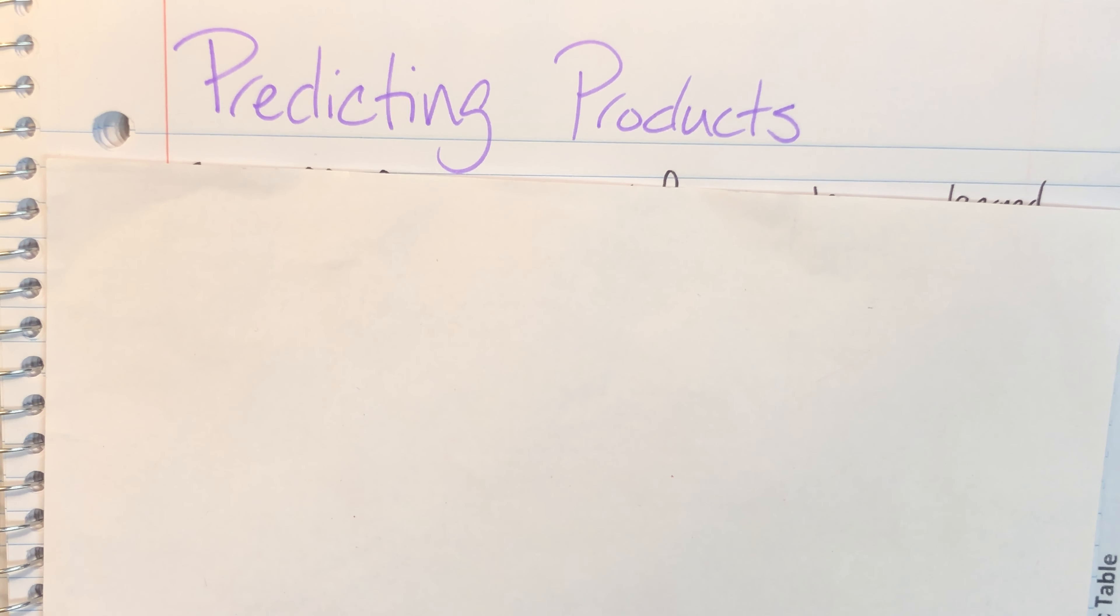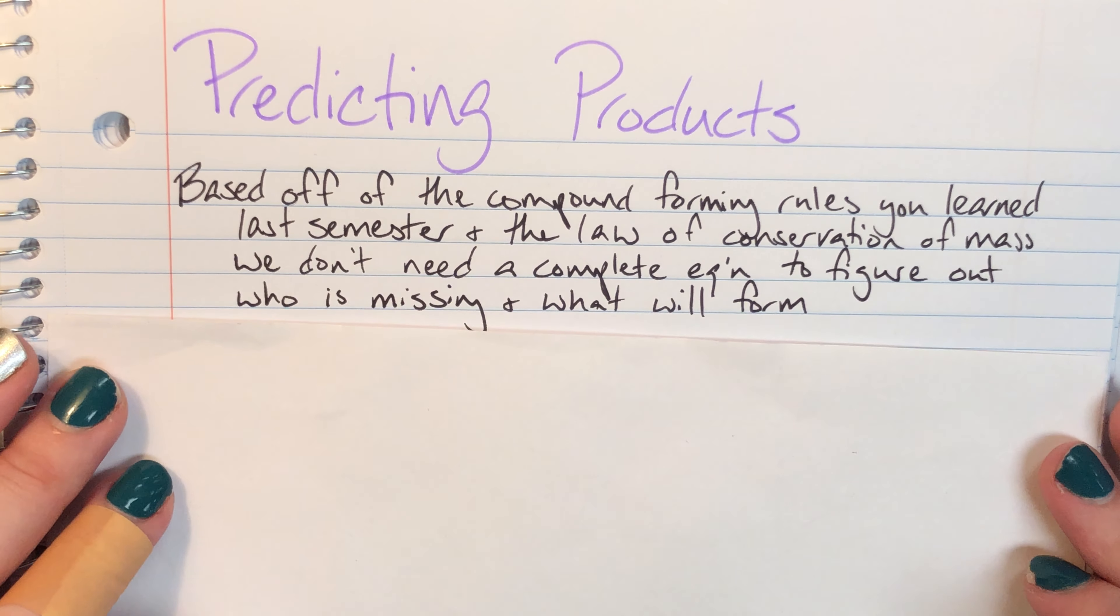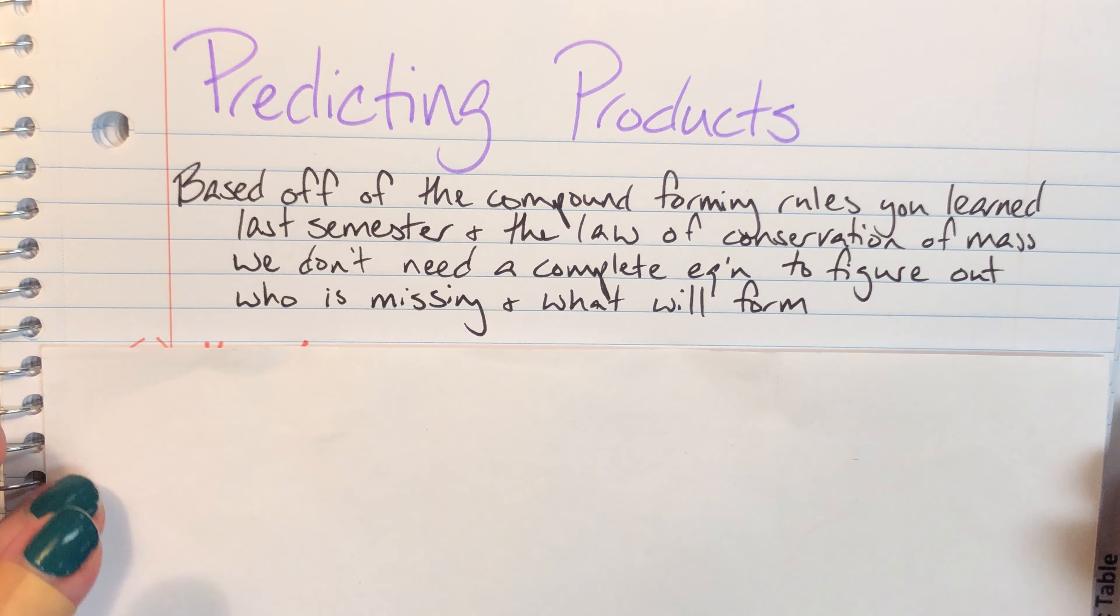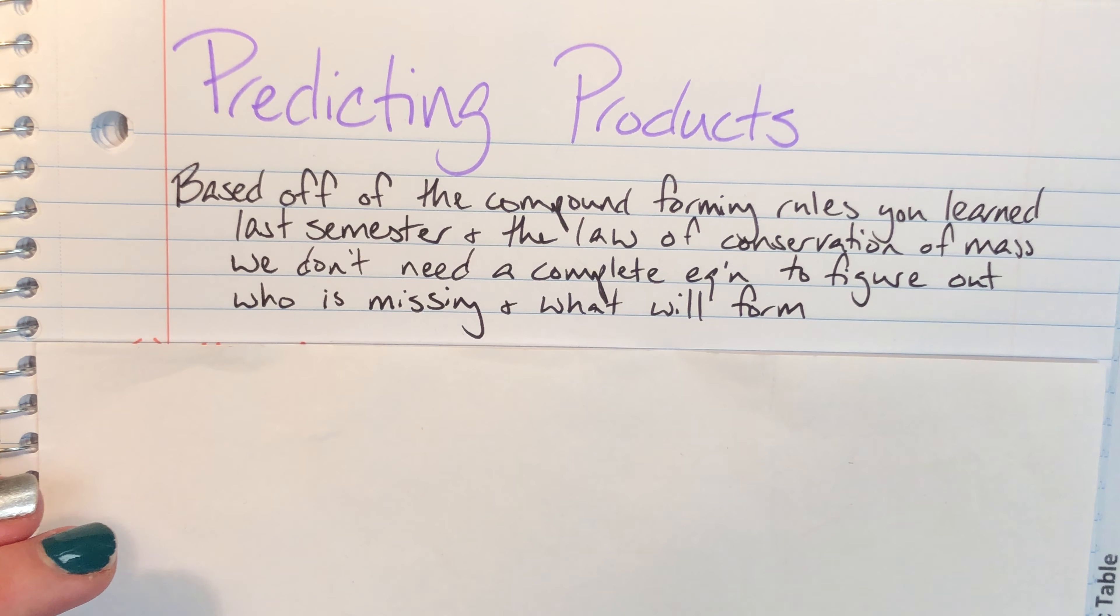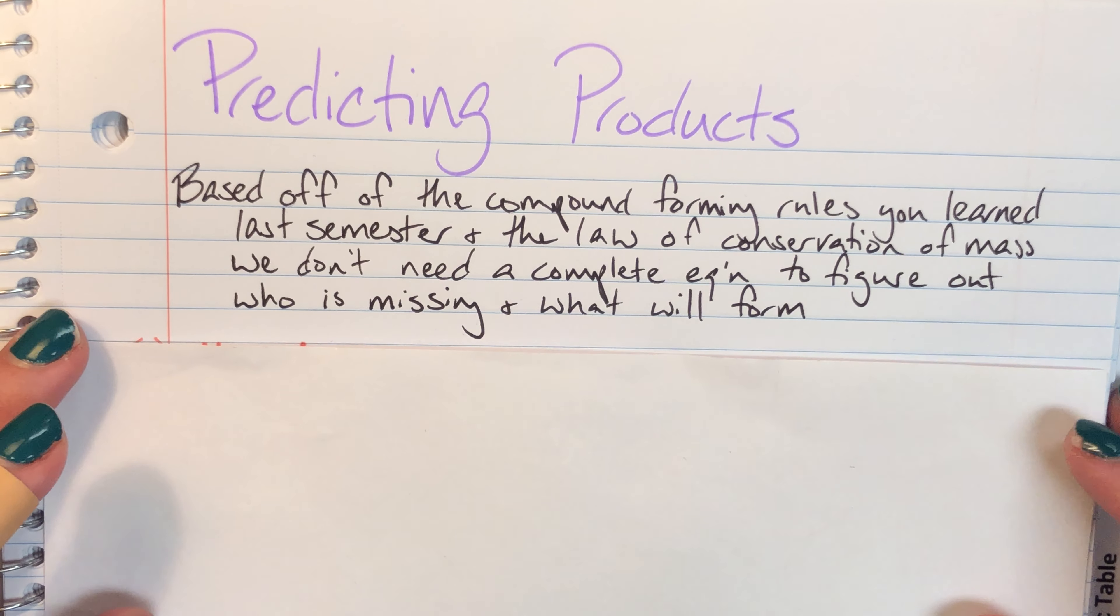Today we will be discussing predicting products. We're able to predict products or any missing components of an equation based off of our compound forming rules that we learned last semester as well as the law of conservation of mass. Since we know of these two things, we don't actually need a complete equation to get the full picture of what's going to happen and what will form. We can go ahead and fill in those blanks ourselves.